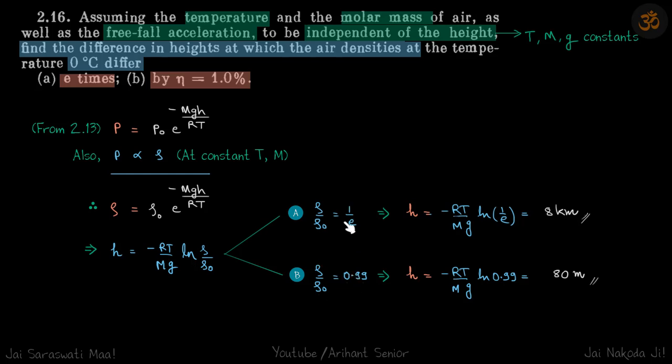Now we know the relation between pressure and height. We already derived it here at constant temperature, constant M, and constant g. They have given those again, so we are going to use this formula, but we don't know the relation between density and height.